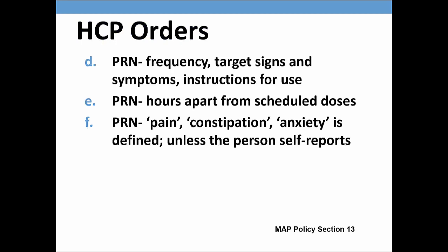A PRN medication order means the medication will only be given for specific target signs and symptoms, which must be included in the HCP order. If there are scheduled doses of the same medication, then the PRN medication order must include a parameter of how closely the doses may be given to each other. Reasons such as pain, constipation, or anxiety must be clearly defined with objective criteria for use. An example of objective criteria for constipation could be defined as 3 days without a bowel movement, and objective criteria for anxiety could be defined as pacing and rocking back and forth for 5 consecutive minutes.